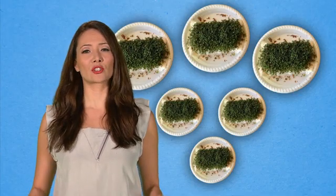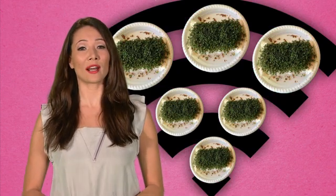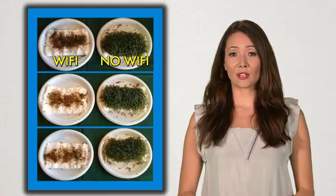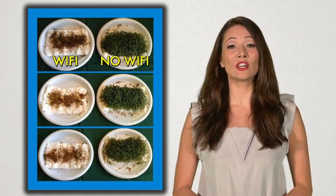But perhaps the simplest and most visual example comes from an award-winning Danish high school science project. The students put six trays of garden cress in a room without Wi-Fi and six trays in a room with a wireless connection. As you can see here, after 12 days, the seeds near the routers did not grow.